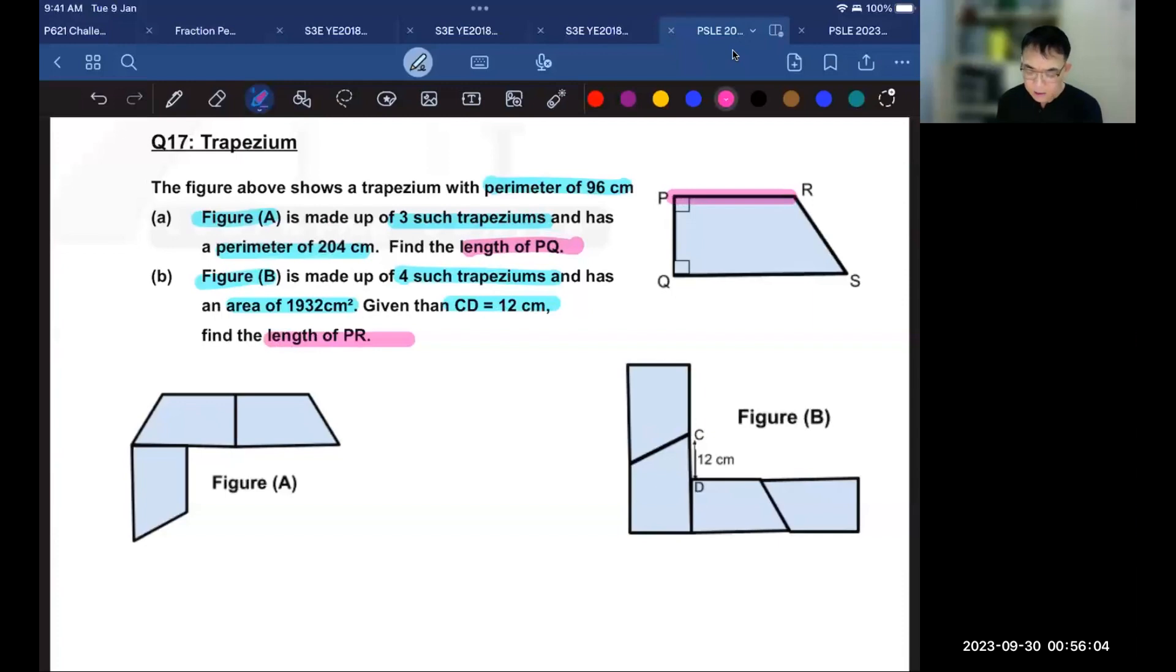This length PR is actually the same as the length PR over here. So in reality, that's what we are finding, because it's the shorter side of the parallel sides.